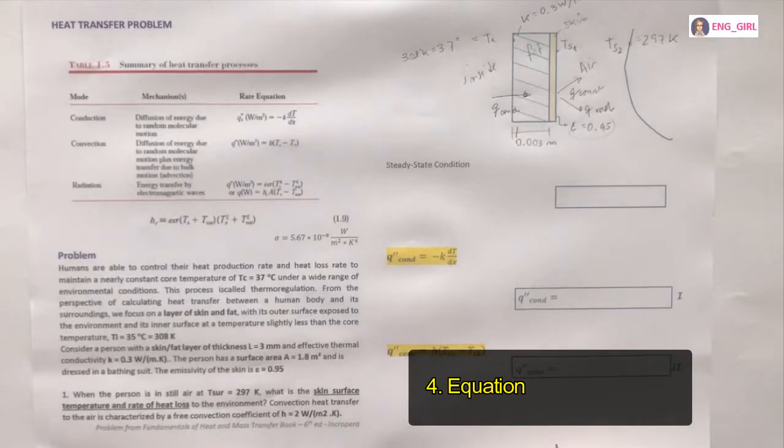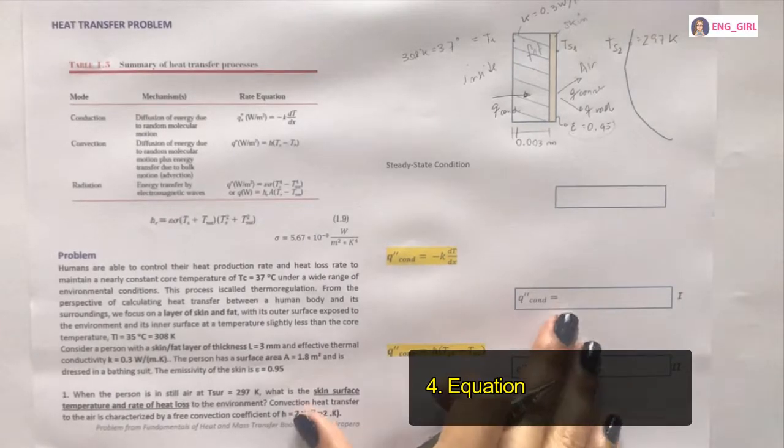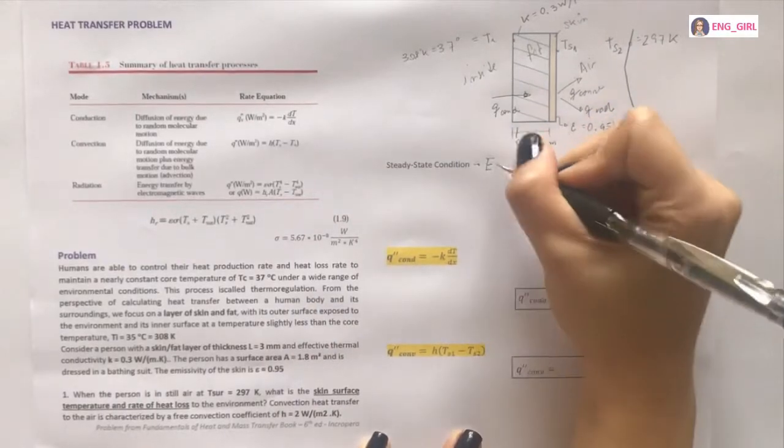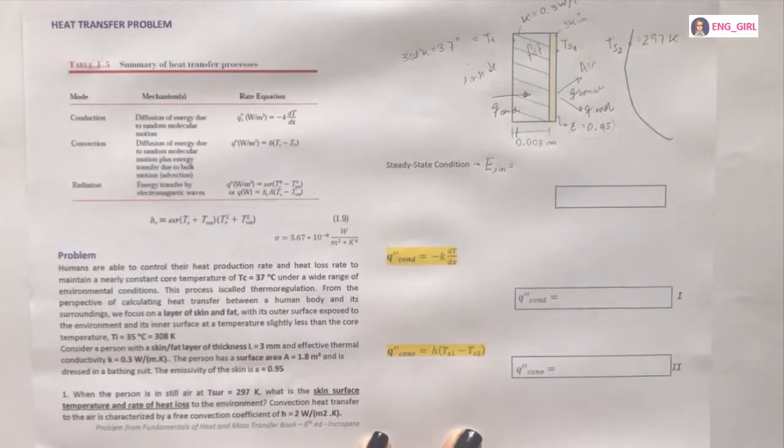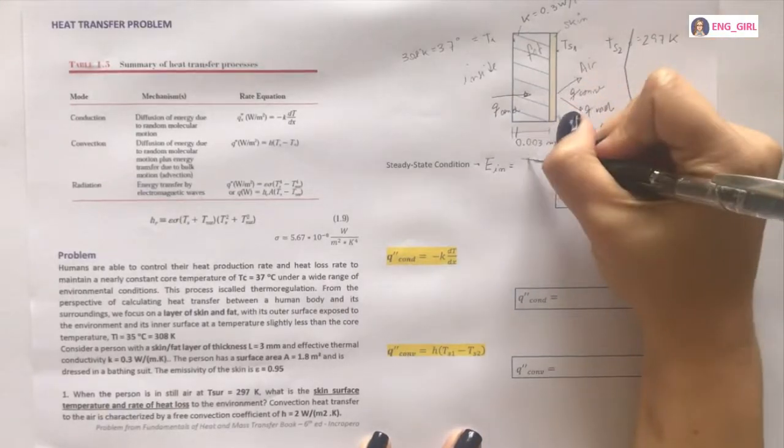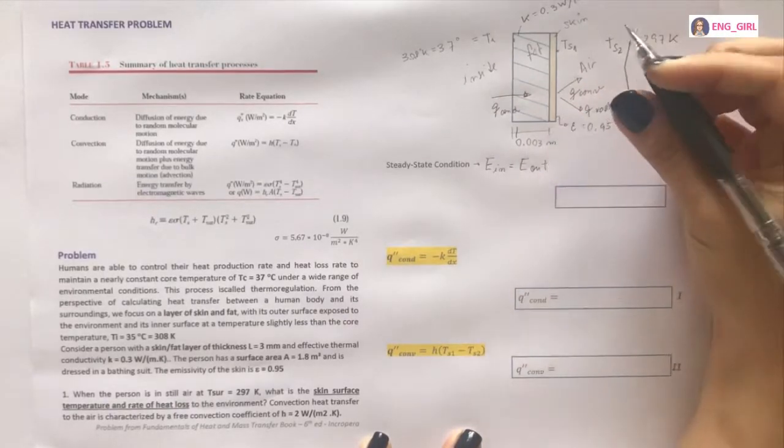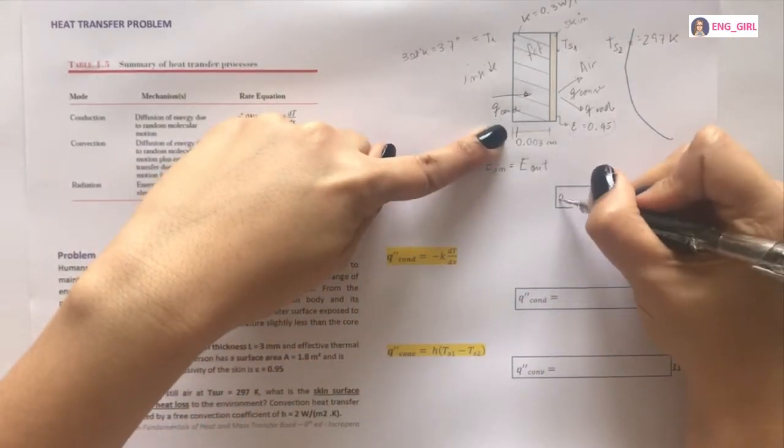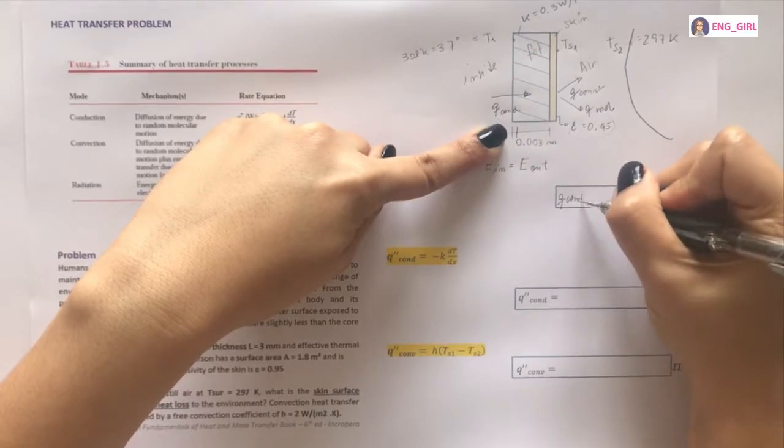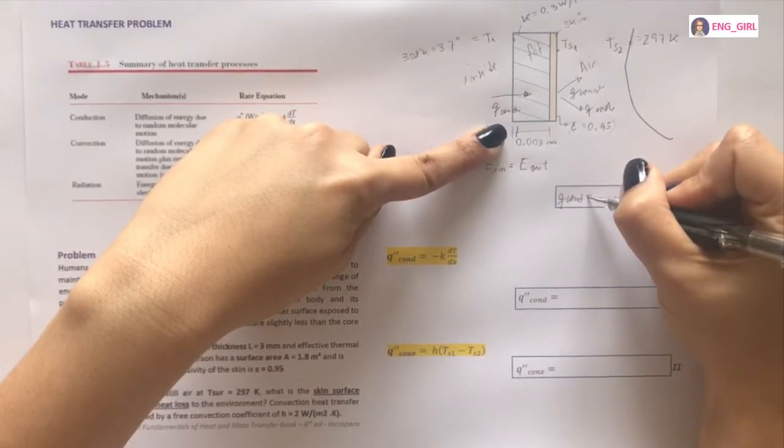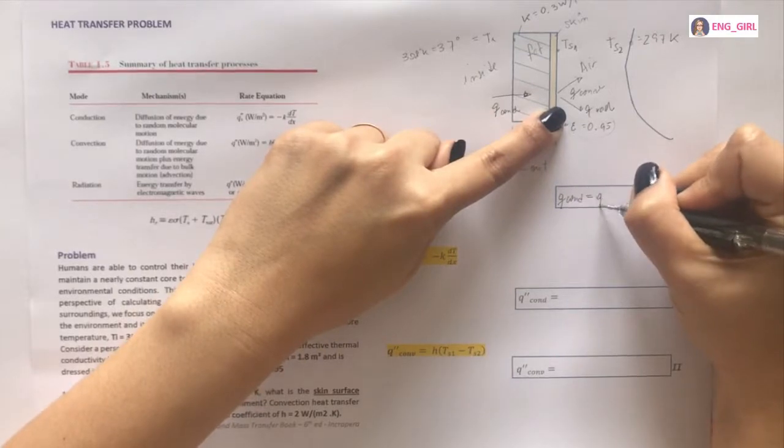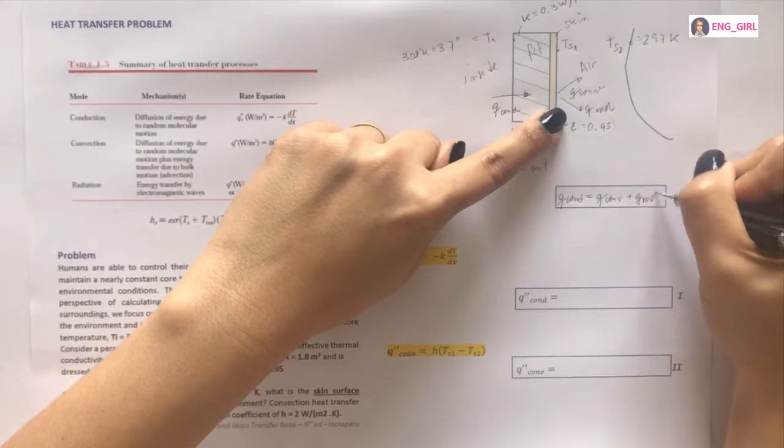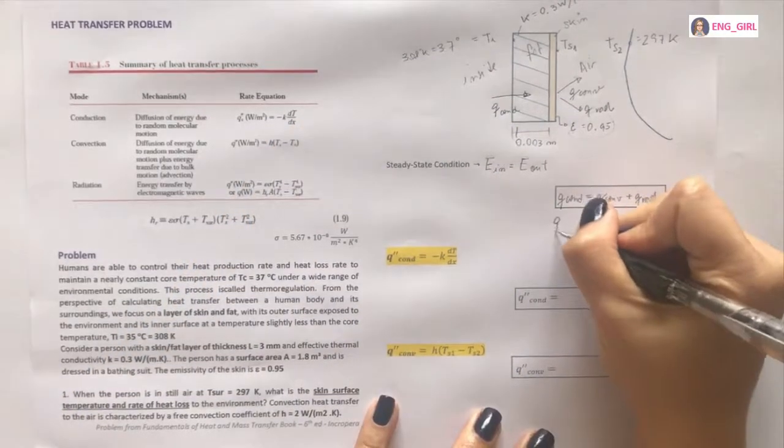Let's go to the equations. We know that this problem is steady state condition. Energy. The incoming energy is equal to the energy coming out. Ok? But, in this case, the energy comes in, Q conduction, equals the energy comes out, Q convection plus Q radiation. We can write it this way.